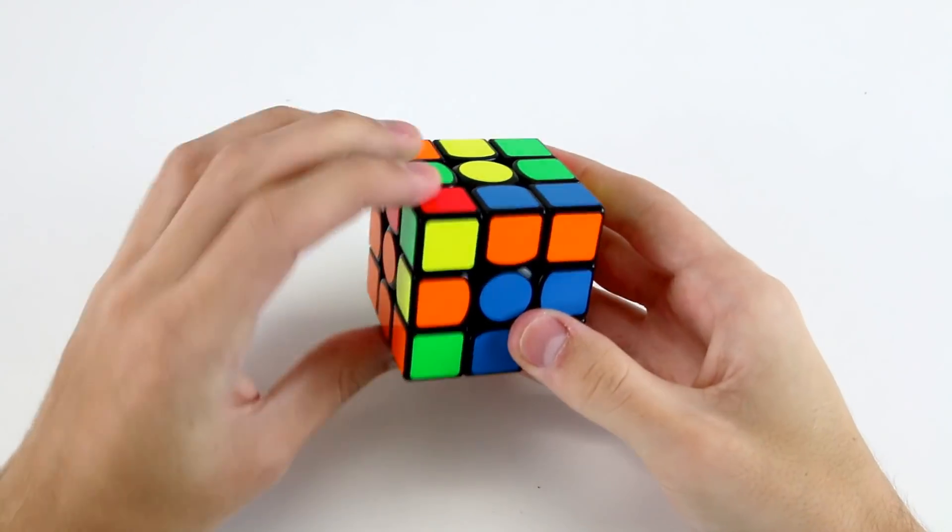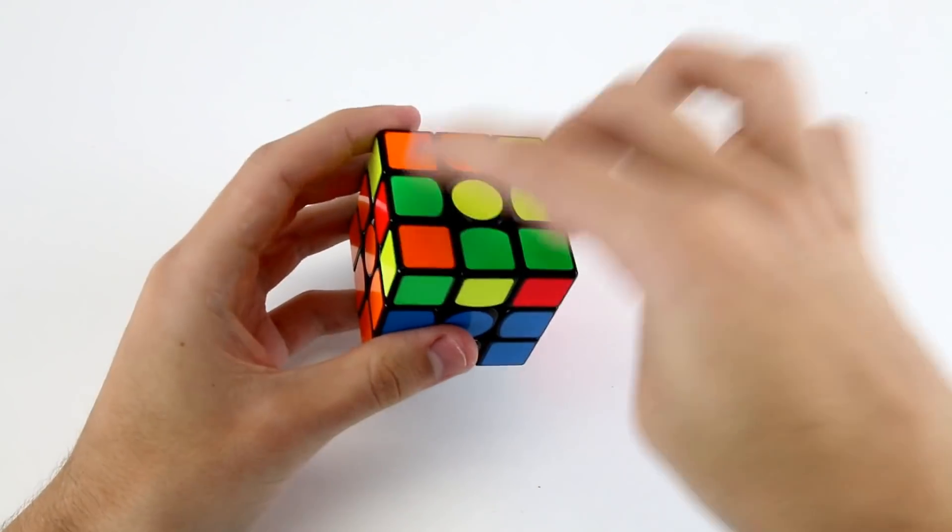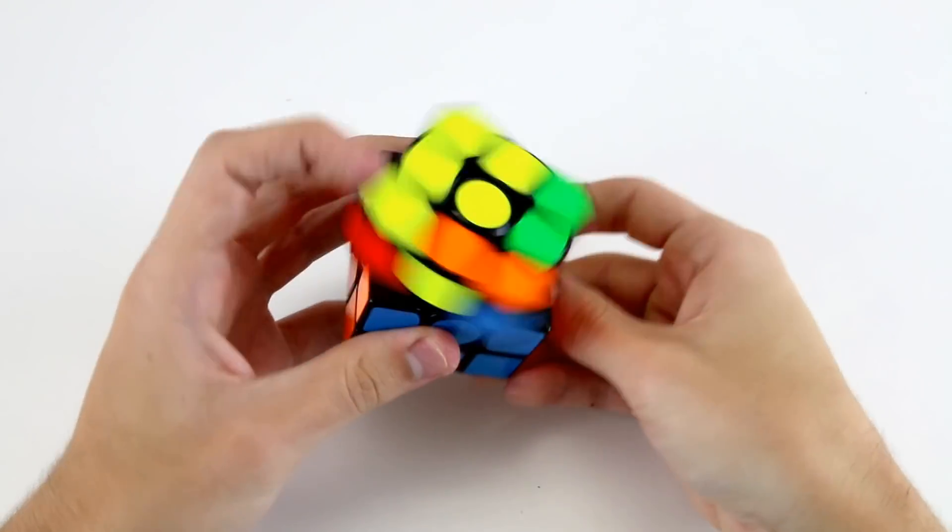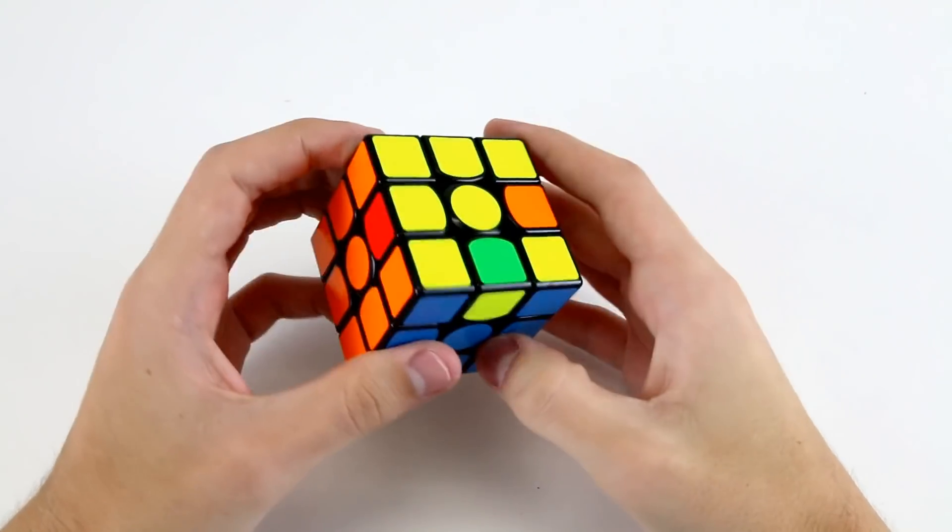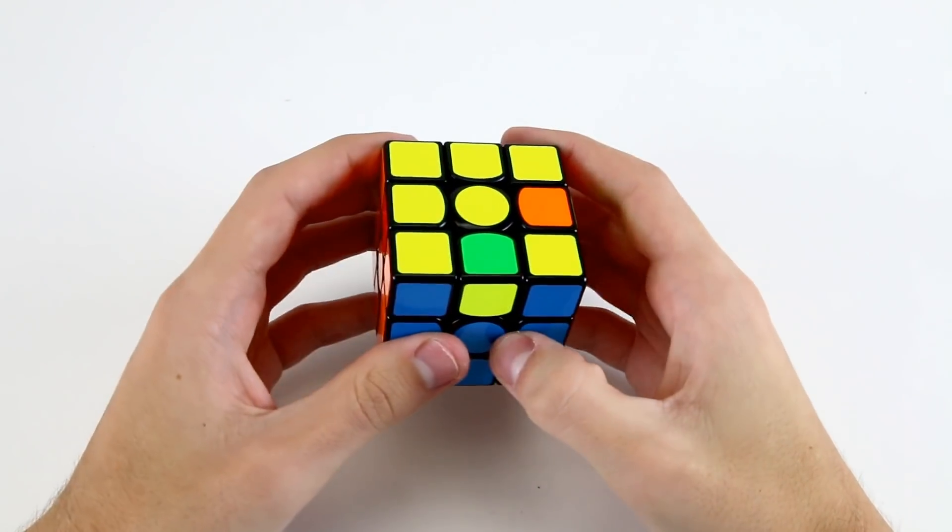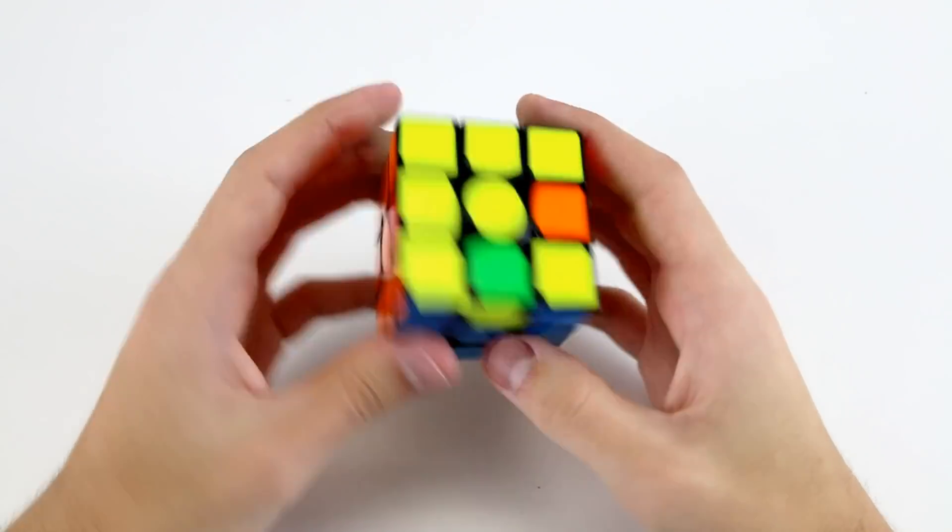And then these two belong in the front left slot which is very easy. Then I've got these two which can go in the back right slot. So that F2L was rotationless but the look ahead would have been really really tough in an actual speed solve.